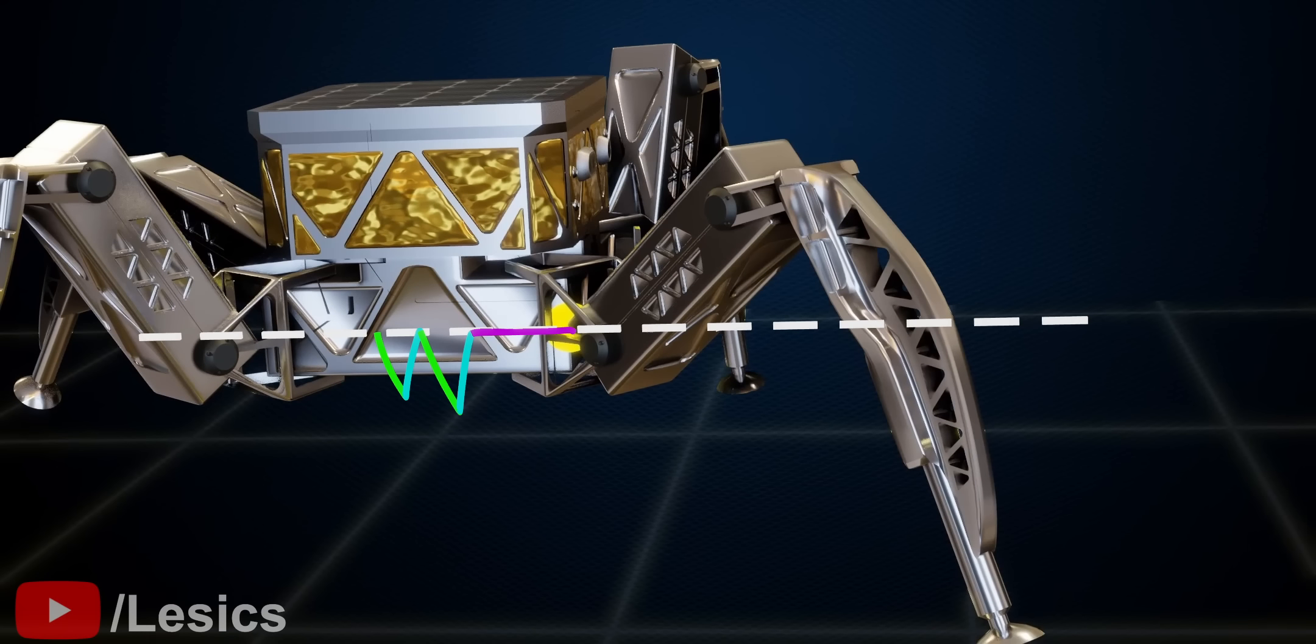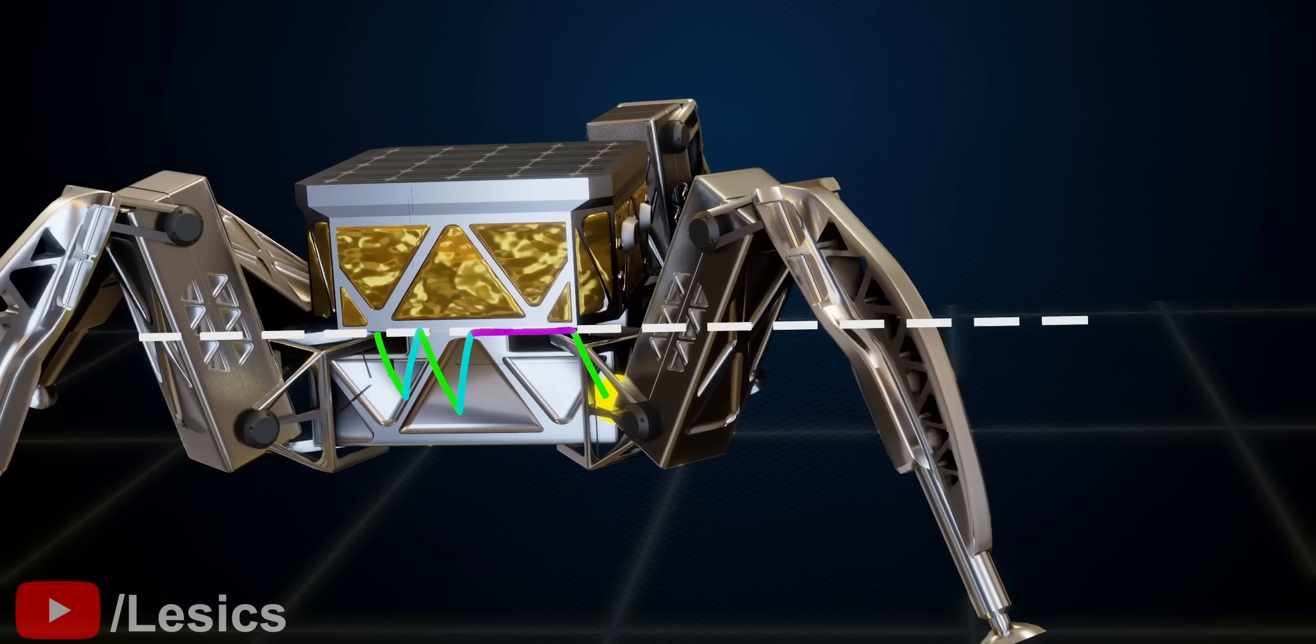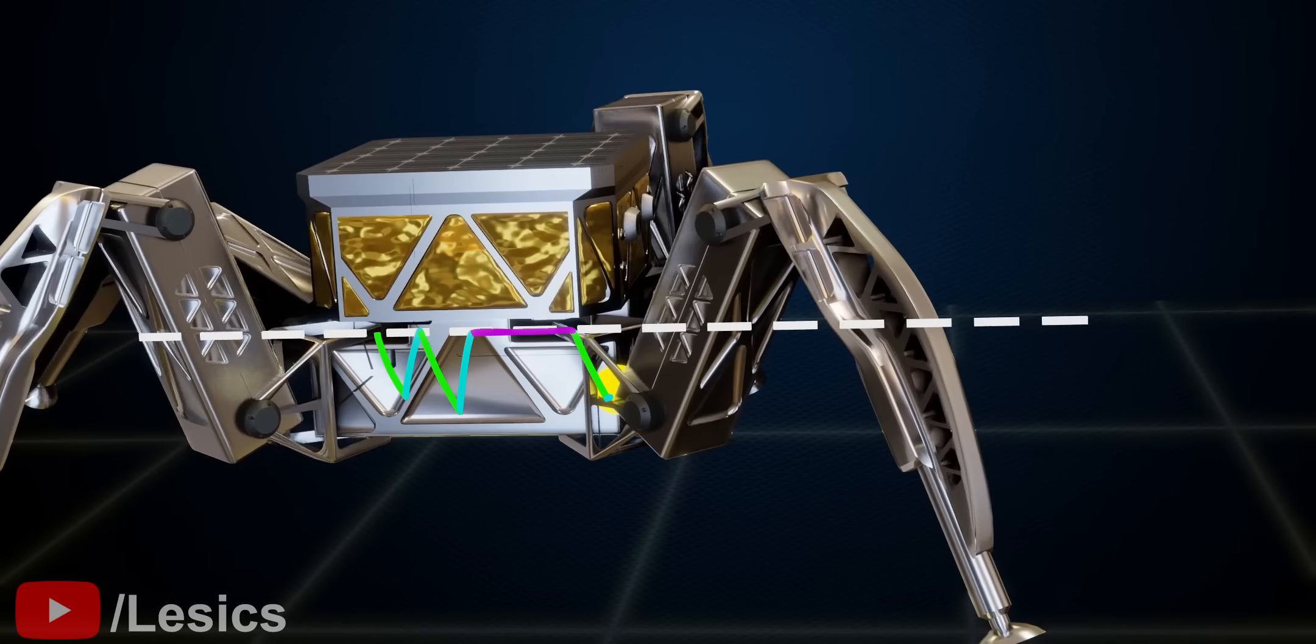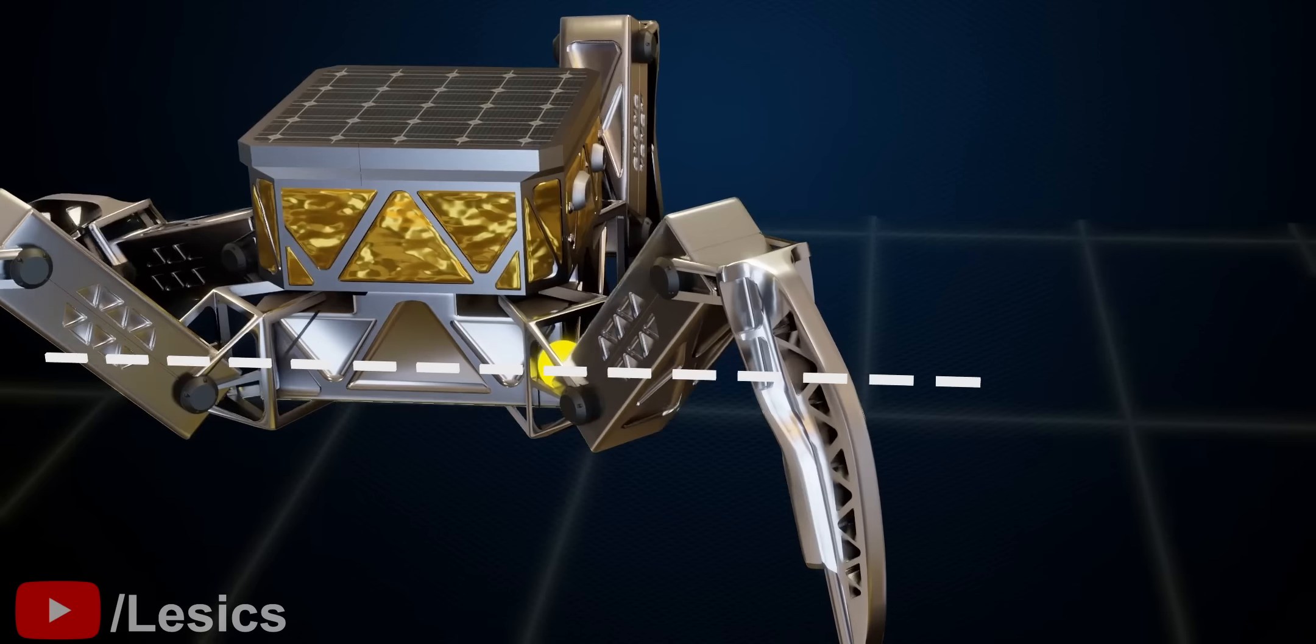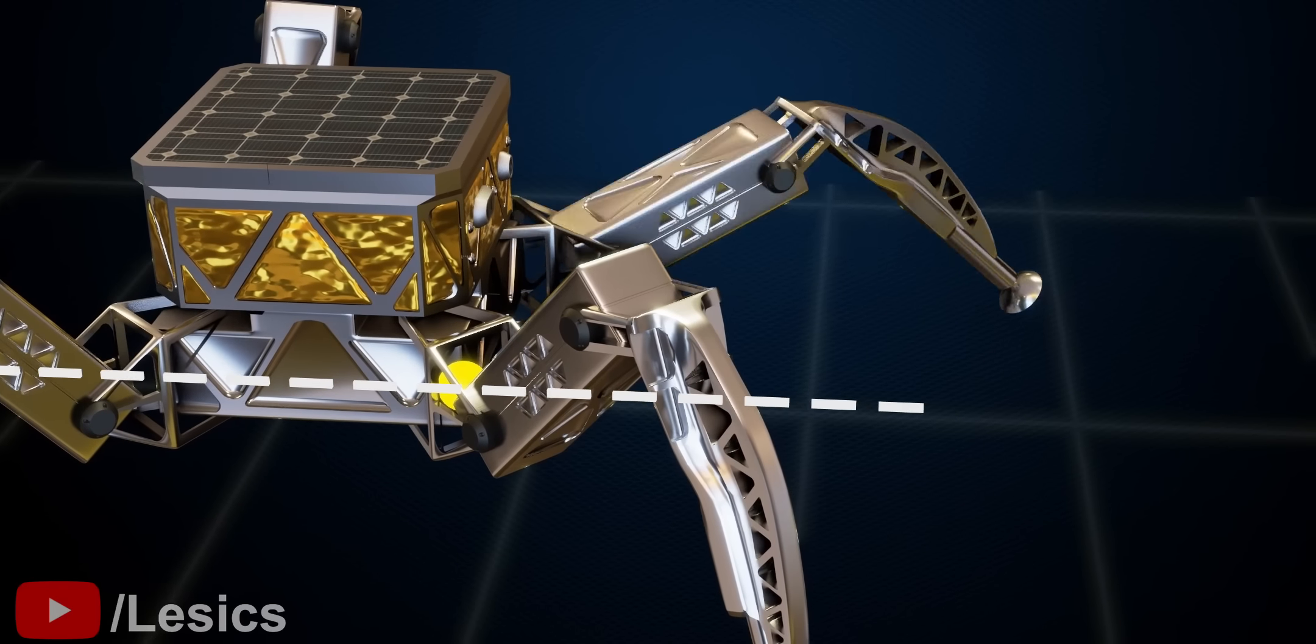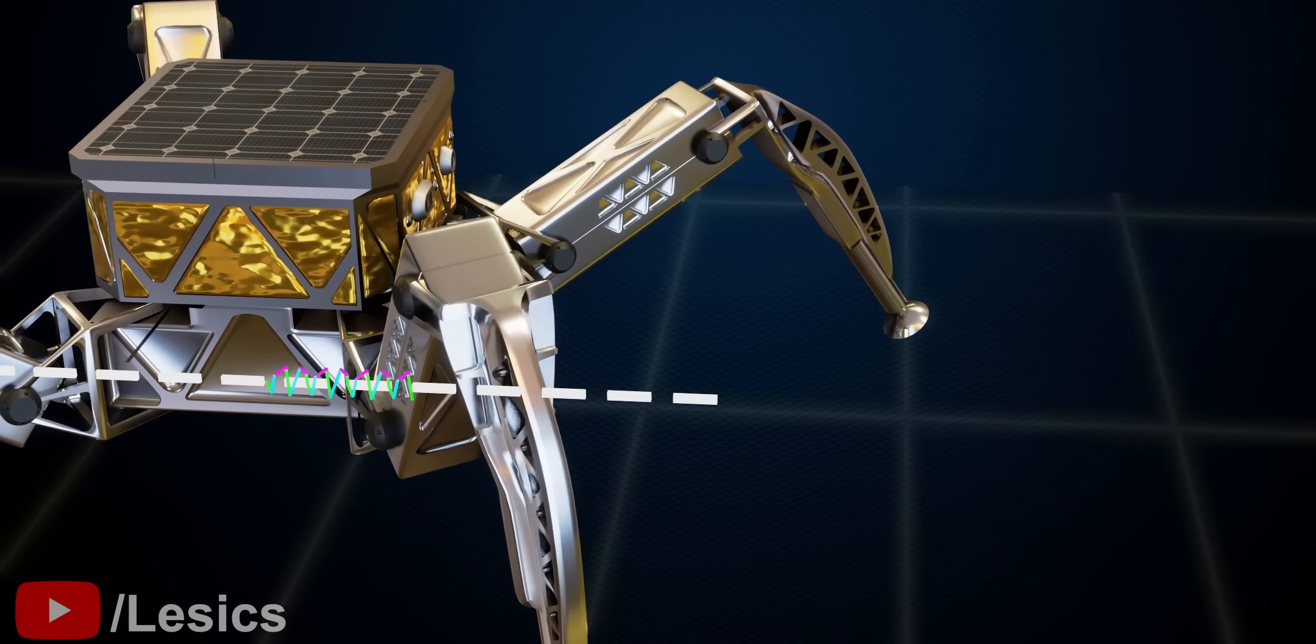Please observe the beautiful forward motion created by the combined motion of three motors. It is brilliant, right? The same operation is happening at the other three legs as well simultaneously to make all the four yellow points move forward. The smoothness of this straight line depends on the minimum angle at which the motors can be rotated.